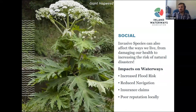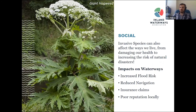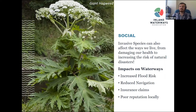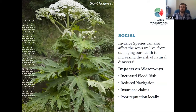Moving on to the social impacts of invasive species. They can also affect the way we live, from damaging our health to increasing the risk of natural disasters. The most commonly quoted invasive species here is giant hogweed — if its sap gets onto your skin and is exposed to UV light, it can cause massive blisters, and it is quite widespread on the waterways.